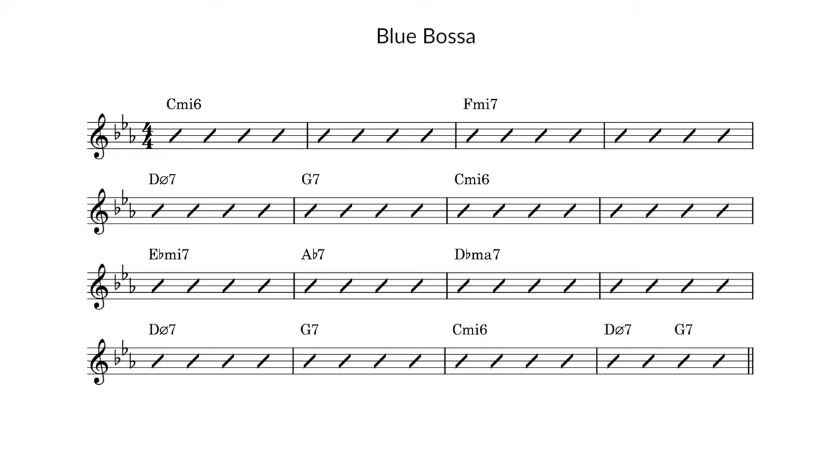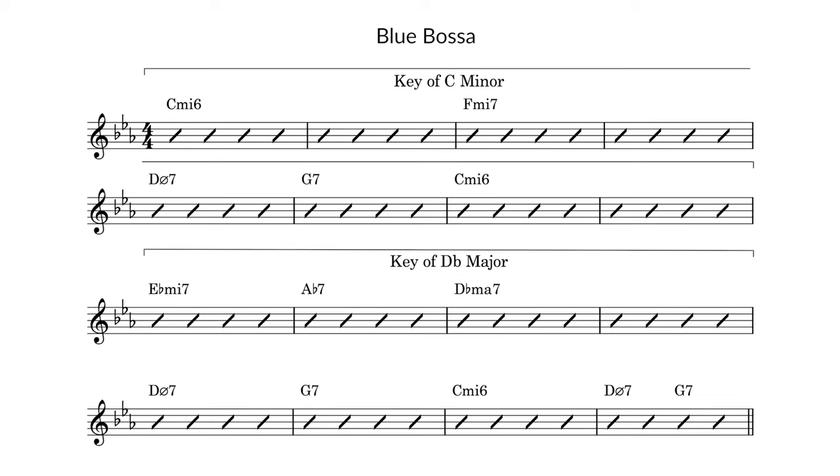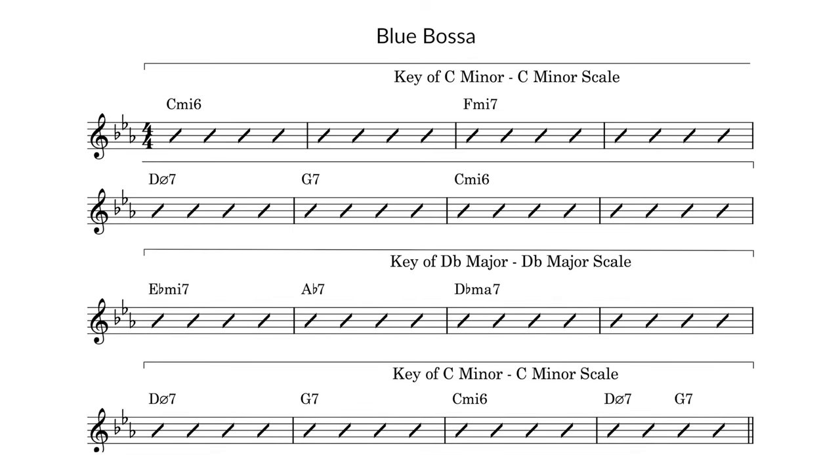Now let's look at how to apply this idea to the jazz standard Blue Bossa. This tune has a 16 bar form. The overall key is C minor where we spend the first eight bars. Then the song modulates to the key of D-flat major for four bars, followed by a return to C minor for the last four bars. With key center improvisation we would use a C minor scale for bars 1 through 8 and 13 through 16, and a D-flat major scale for bars 9 through 12.